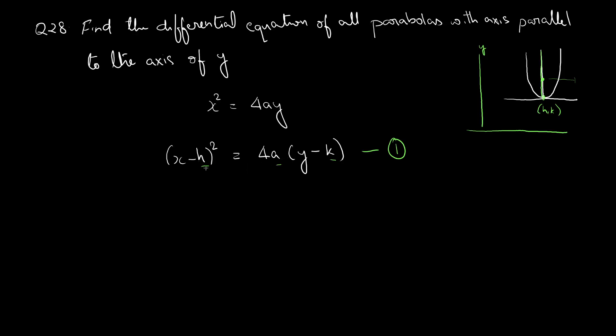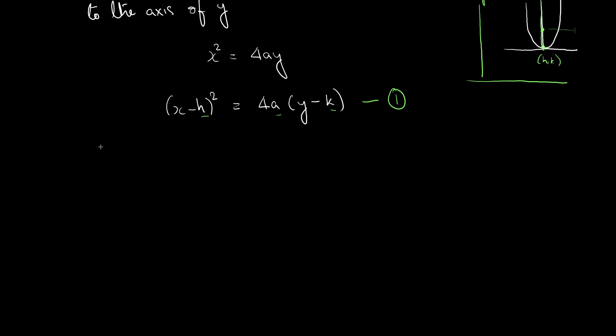We need to eliminate these 3 parameters to get our differential equation. And our differential equation will be of order 3, since we have 3 arbitrary constants. So, we can eliminate arbitrary constants by differentiating d by dx.